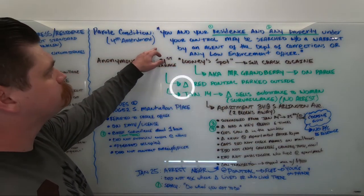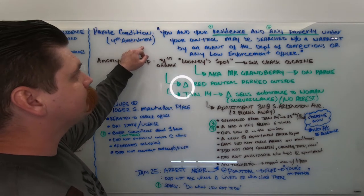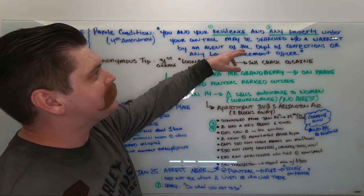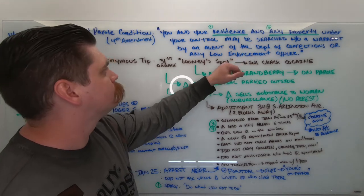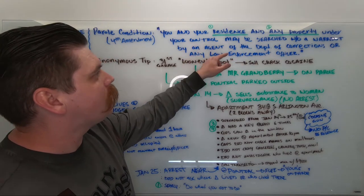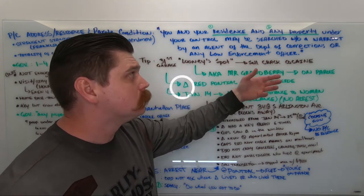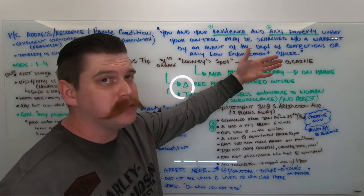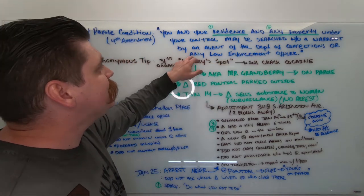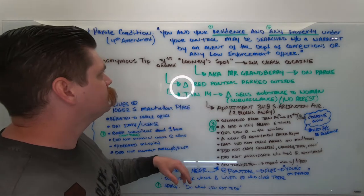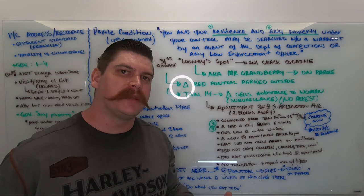The parole condition that Mr. Granbury signed stated, you and your residents and any property under your control may be searched without a warrant by an agent of the Department of Corrections, because after all, he's on parole. So the Department of Corrections would be his probation parole officer. But it also says or any law enforcement officer. So it's a very broad provision. At first, when you read it, it seems like he has no Fourth Amendment rights at all.